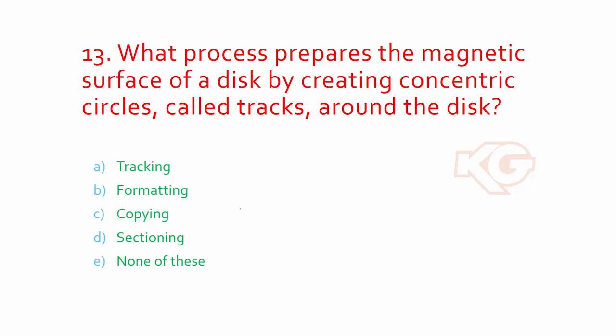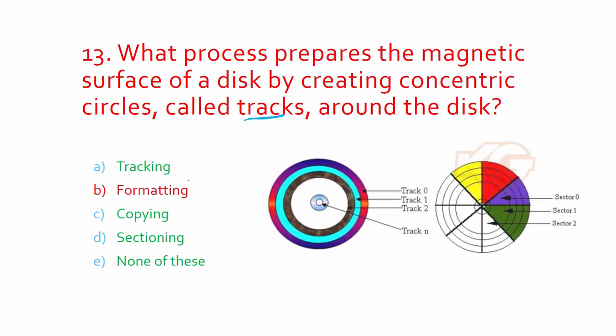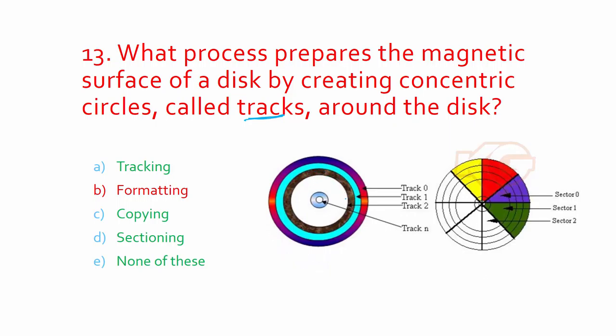What process prepares the magnetic surface of a disk by creating concentric circles called tracks around the disk? You know the concentric circles are called tracks, but what makes the unstructured data into tracks? The process is called formatting. The answer should be option B: formatting. The format for disks appears as concentric circles. You can see track one, track two, track three, and so on. So the process is formatting.